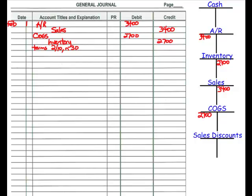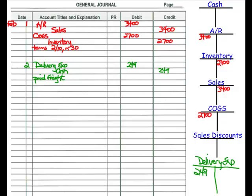On February 2nd, the company paid $249 to ship the merchandise sold on February 1st. So on the 2nd, we're going to debit a new account called delivery expense and credit cash for $249. When we deliver goods to customers and pay shipping charges, those charges go in their own account called delivery expense. This is different from shipping charges paid when purchasing inventory — freight charges for goods coming in get added to the cost of inventory, while shipping charges for goods going out to customers is a delivery expense.